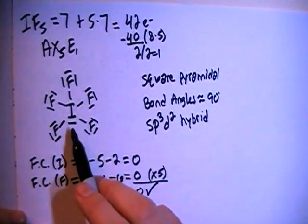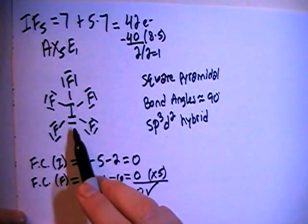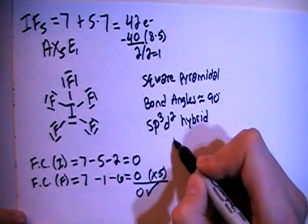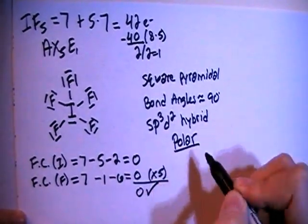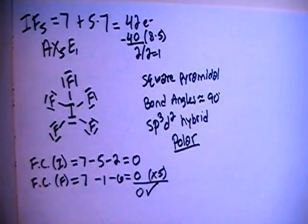Okay, and because of the fact that we have this non-bonding pair of electrons here on the bottom, that is going to make this a polar compound. That is pretty much it for this one. If you have any questions please let me know and thanks for watching.